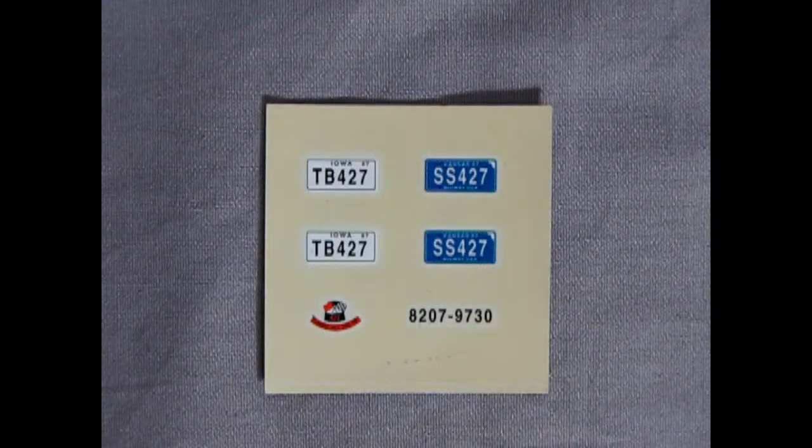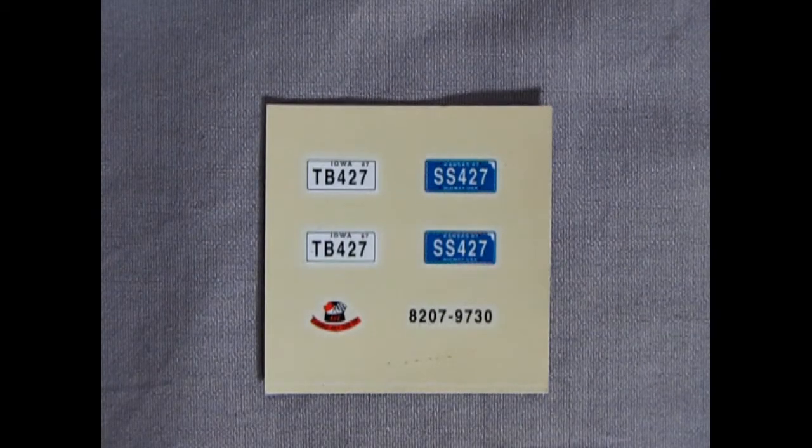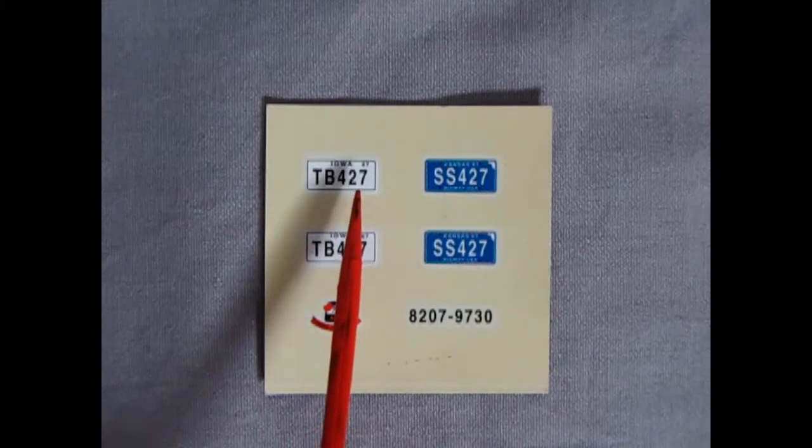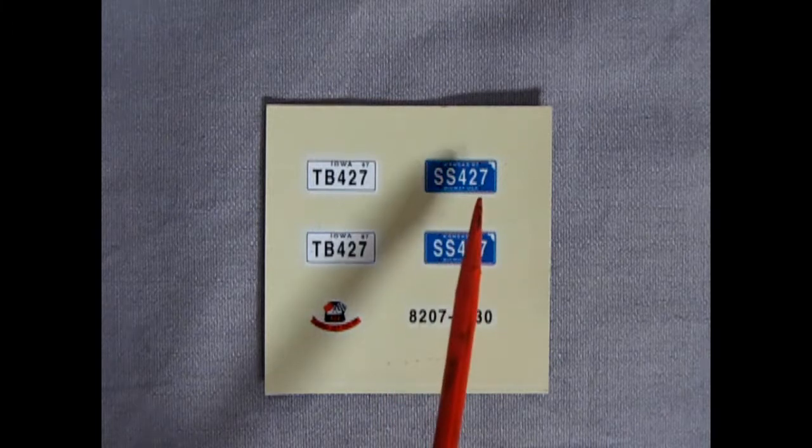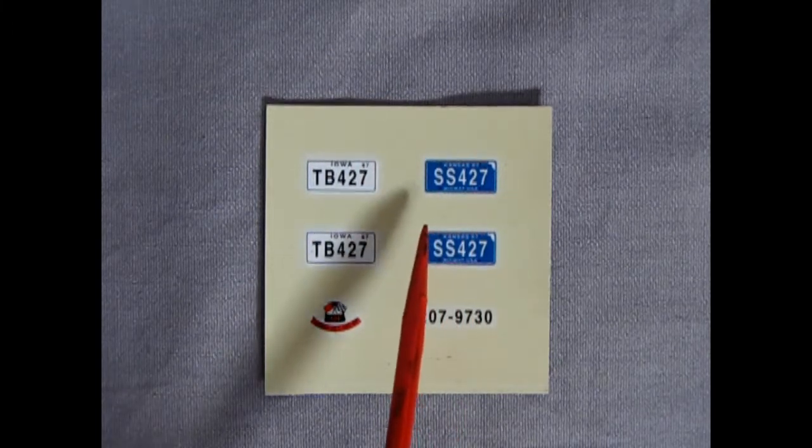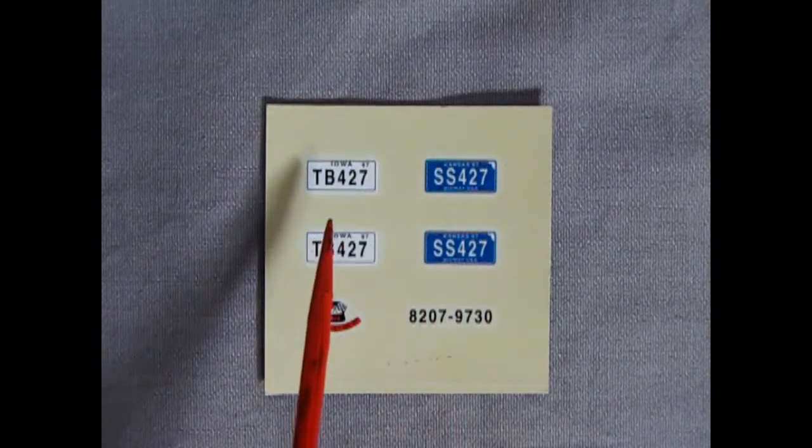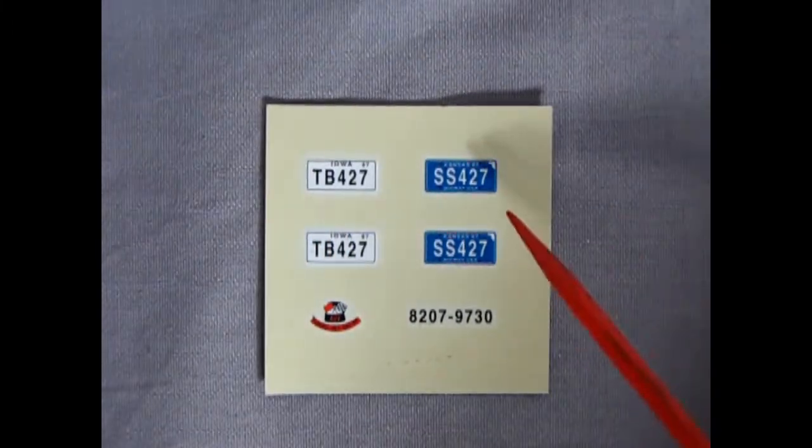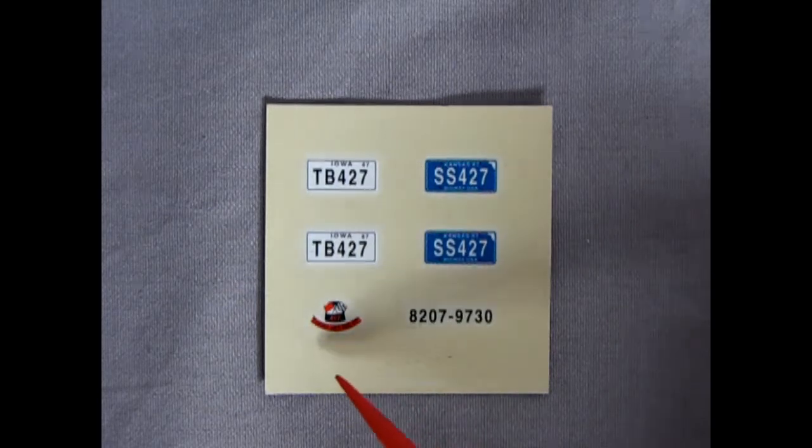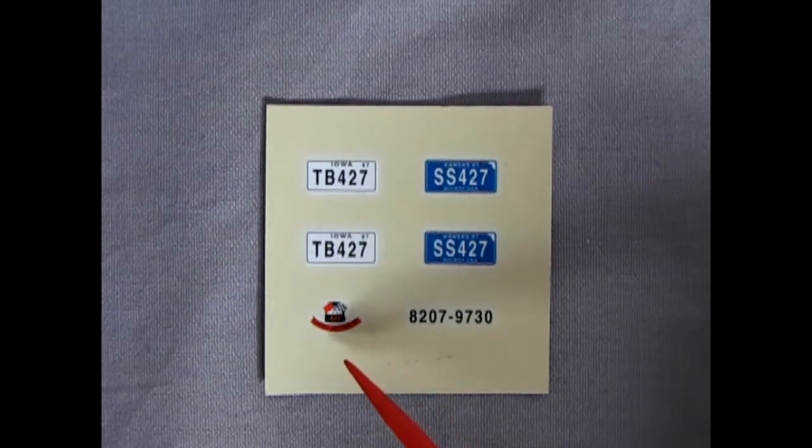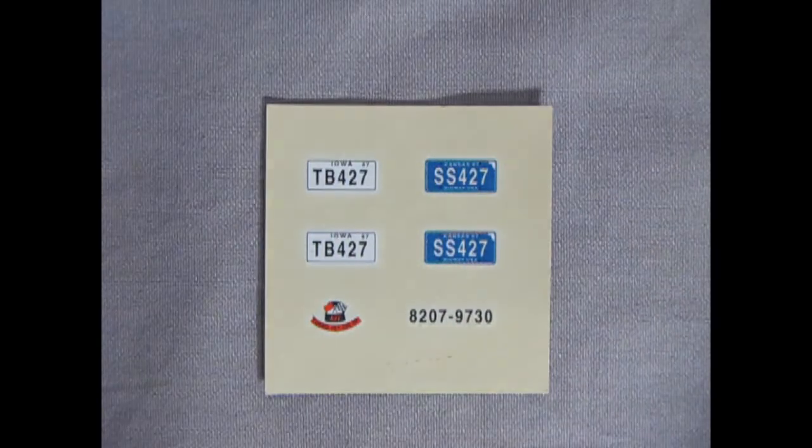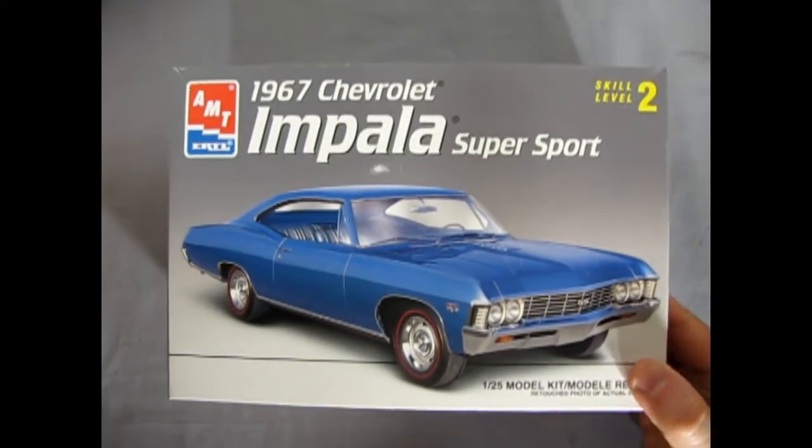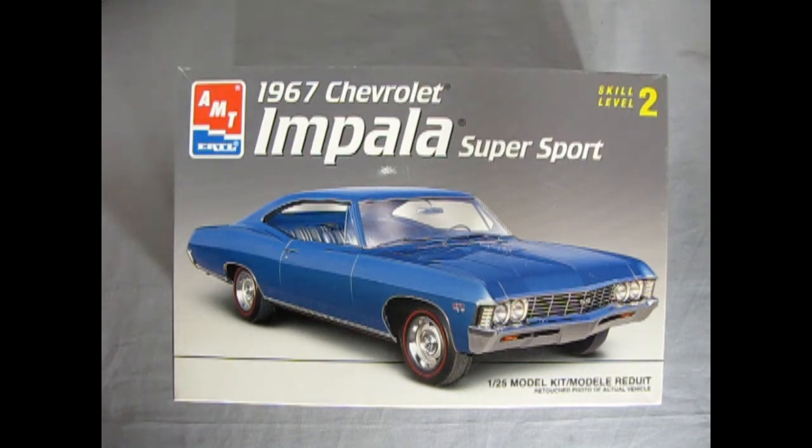And here's the final bit of our model kit. Of course, I'm referring to the decal sheet. And you get two wonderful license plates from Iowa from 1967 and Kansas from 67 as well. One is SS-427. The other is TB-427. The 427, of course, referring to the engine. And here's the air cleaner decal for your 427 right there. And that completes our look at the AMT Ertl 67 Chevrolet Impala Super Sport model kit.